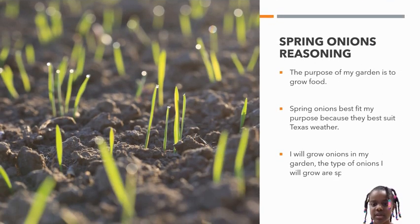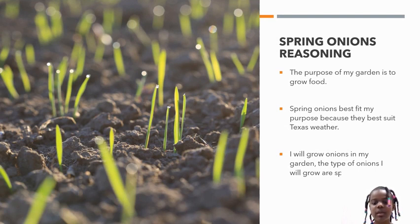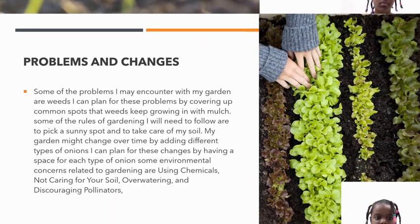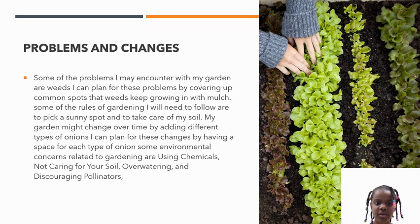Spring Onion Reasoning: The purpose of my garden is to grow food. Spring onions best fit my purpose because they best suit Texas weather. I will grow spring onions in my garden. Some problems I may encounter are weeds. I can plan for these by covering common spots where weeds grow with mulch. Some rules of gardening I will need to follow are to pick a sunny spot and to take care of my soil.